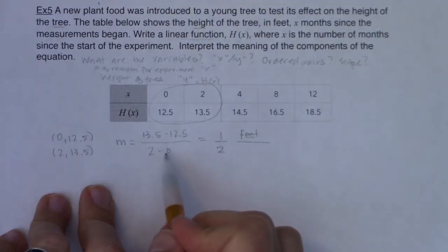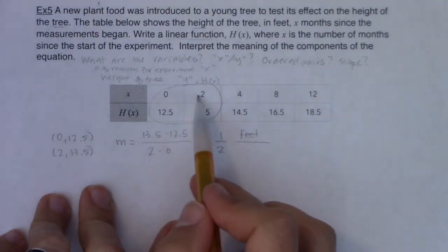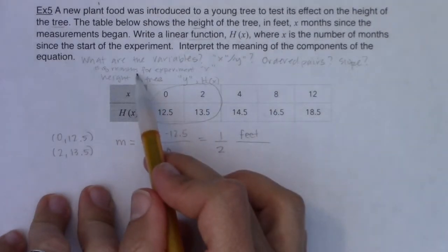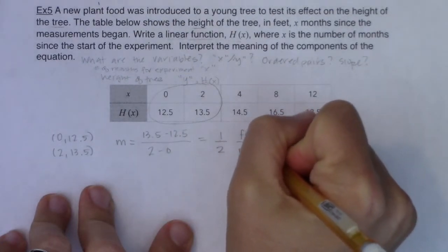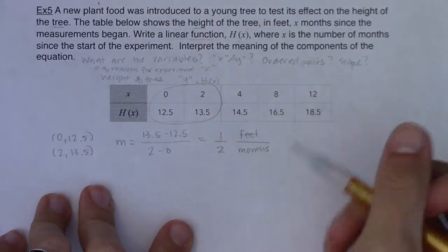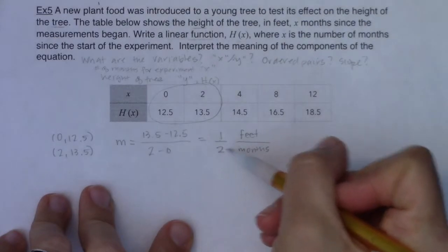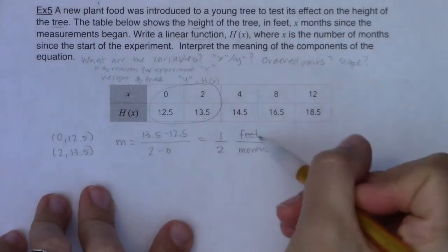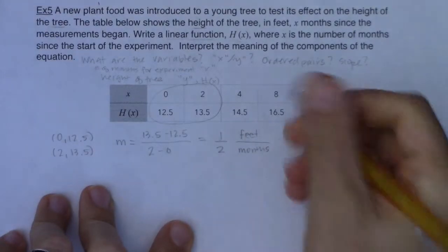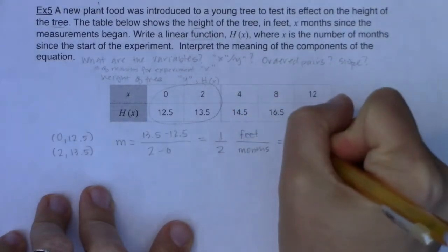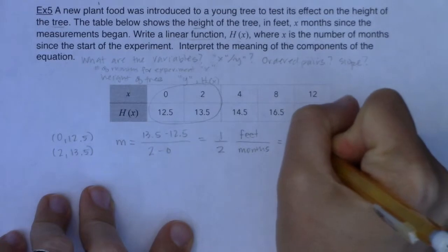All right, our X variable down here on the denominator, this 2, all right, because I was doing 2 minus 0, these are X values. Well, what were the units for the X variable? It looks like it was months. So what happened to this tree? Well, in two months, it grew one foot. All right, change in X over change in Y. Now, if I wrote this one half, if I wrote it as a decimal, it would be 0.5, right?